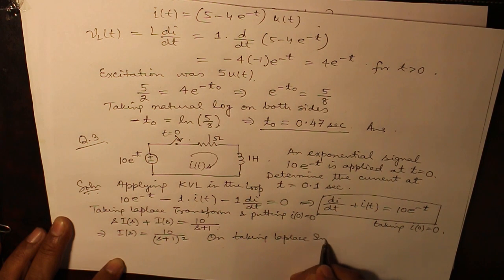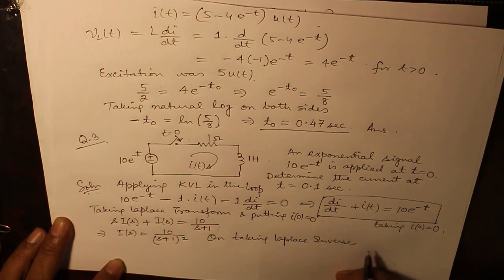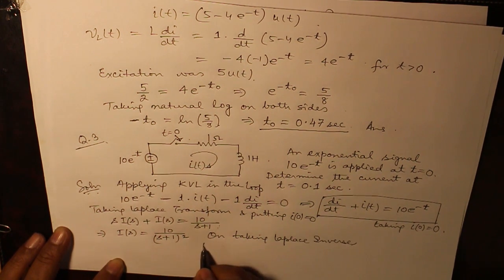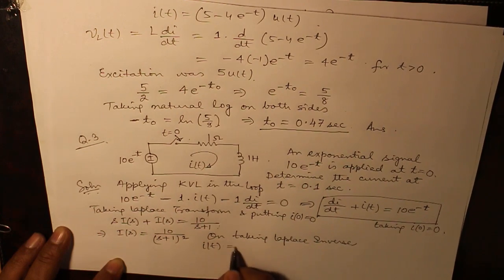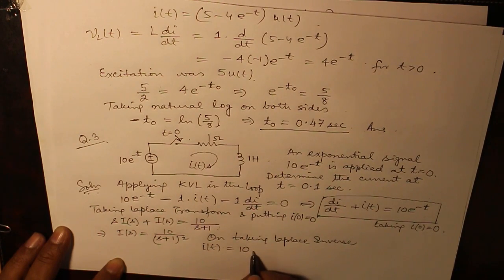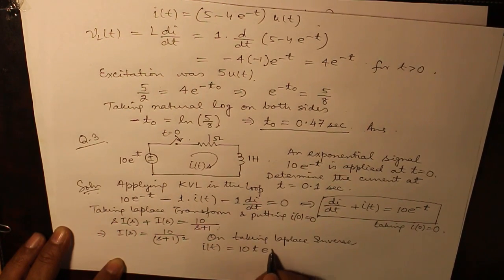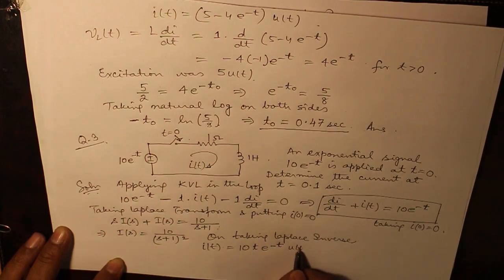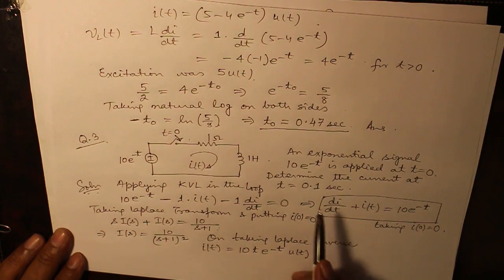On taking Laplace inverse and remembering the formula that 1 over s plus 1 whole square is e raised to the power minus t into t, this gives you it as being equal to 10 t into e raised to the power minus t.